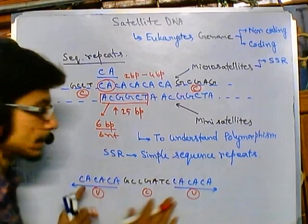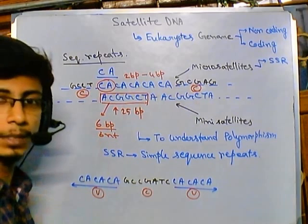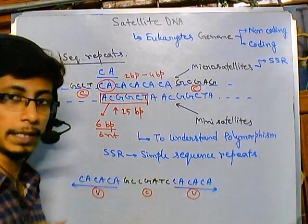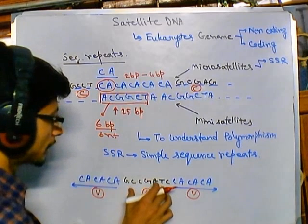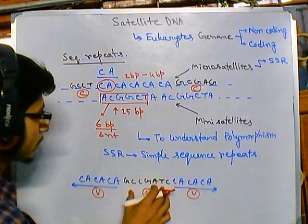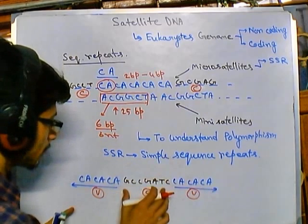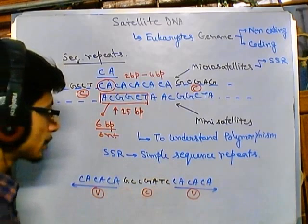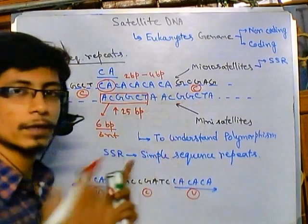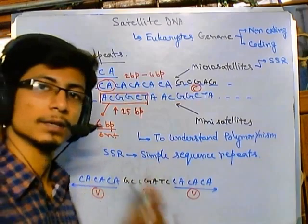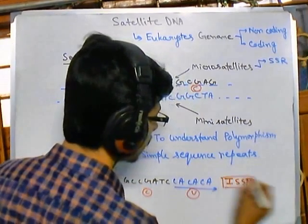These are called Inter Simple Sequence Repeats or ISSR. They are called inter simple sequence repeats because when we compare this kind of sequence between individuals, the variation we get is in the middle constant region's flanking repeats. Due to differences in this stretch of the middle, we can get differences in length when we amplify this part — for some individuals it could be one size, for others a different size.